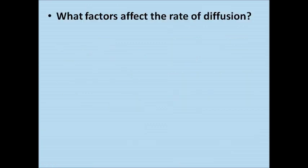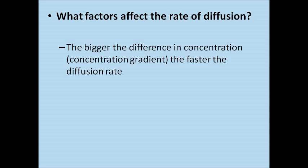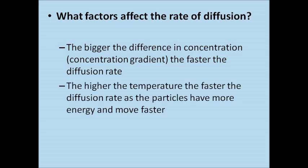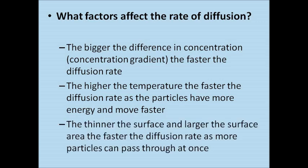What factors affect the rate of diffusion? The bigger the difference in concentration — the concentration gradient — the faster the diffusion rate will be. The higher the temperature, the faster the diffusion rate, as the particles have more energy and therefore can move faster. And the thinner the surface and the larger the surface area, the faster the diffusion rate, as more particles can pass through at once.